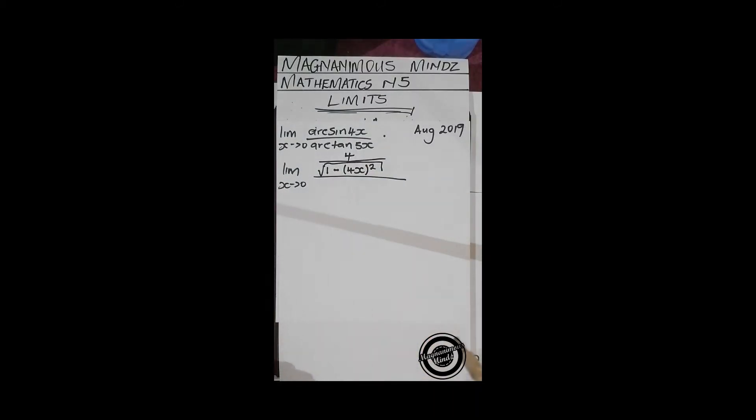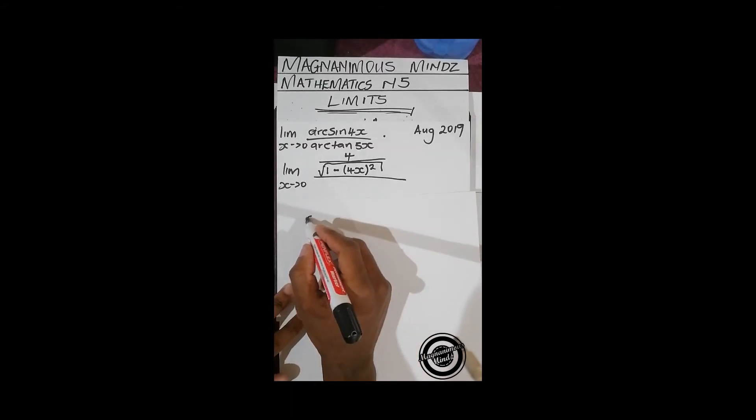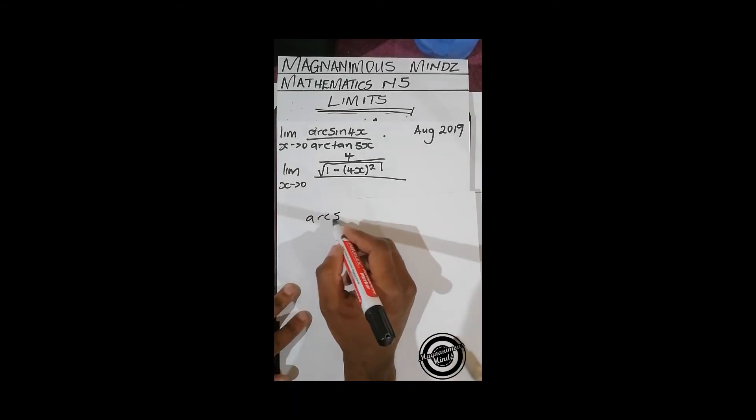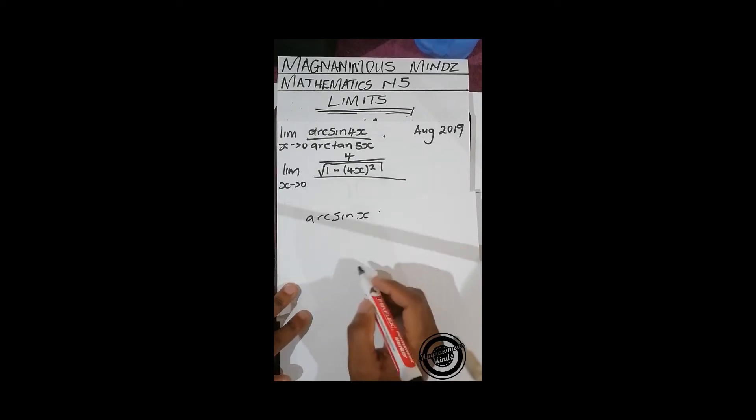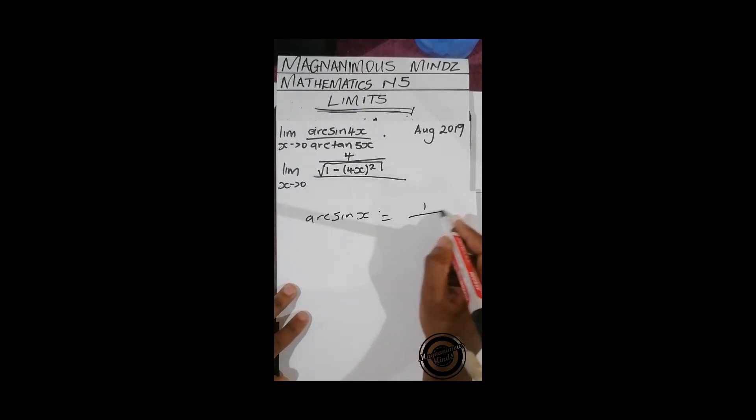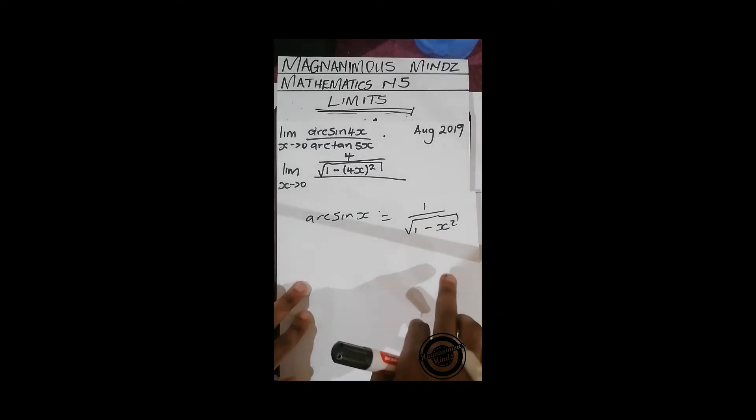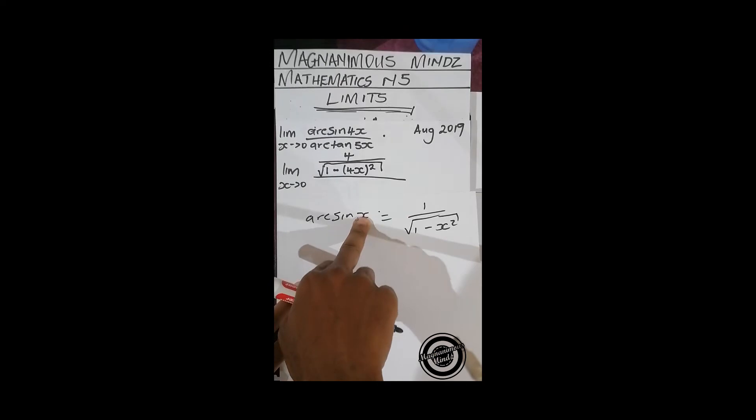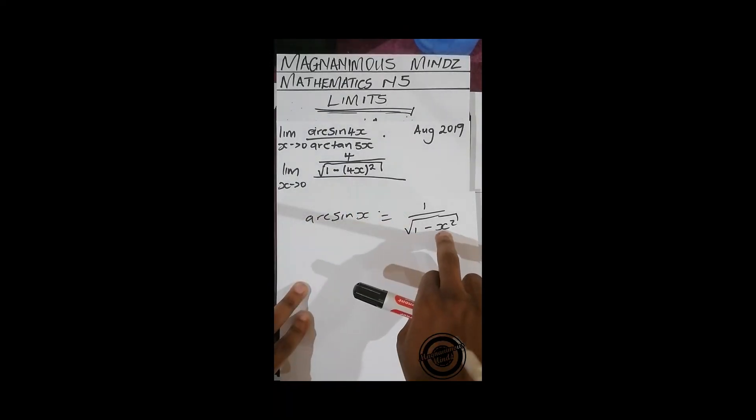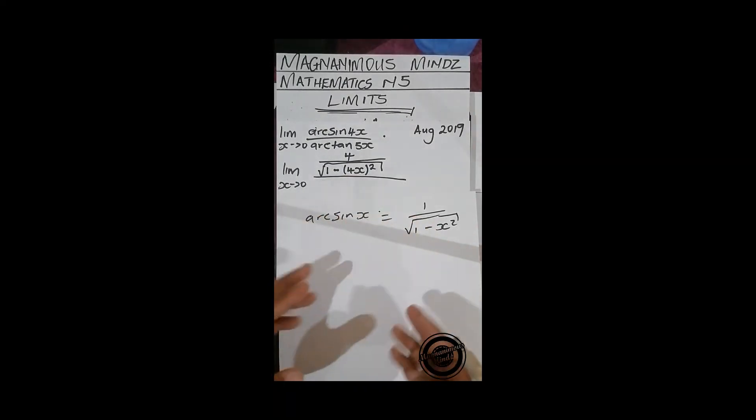Why is it like this? Because if you differentiate arc sine x, you get 1 over square root 1 minus x squared. But in this case, instead of x we've got 4x, so you substitute 4x as it is in there. So it's going to be 4x all squared.